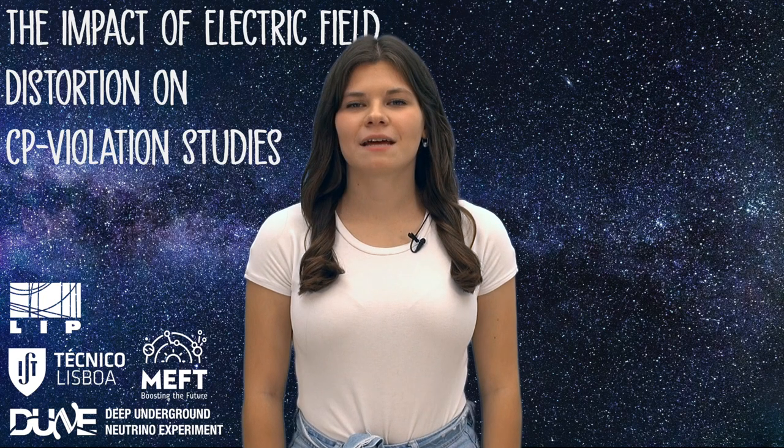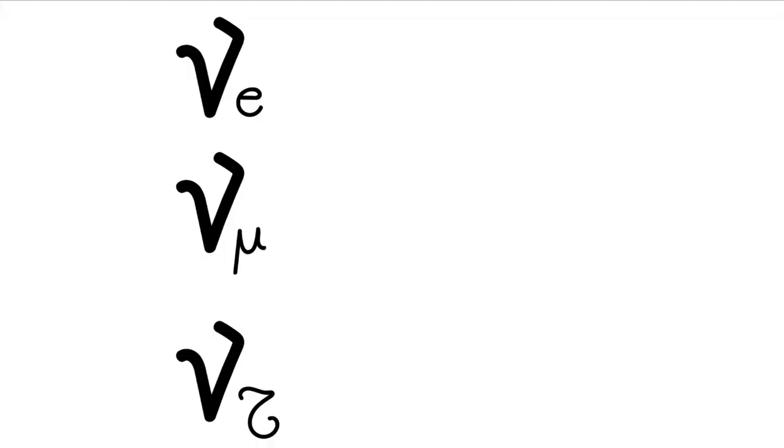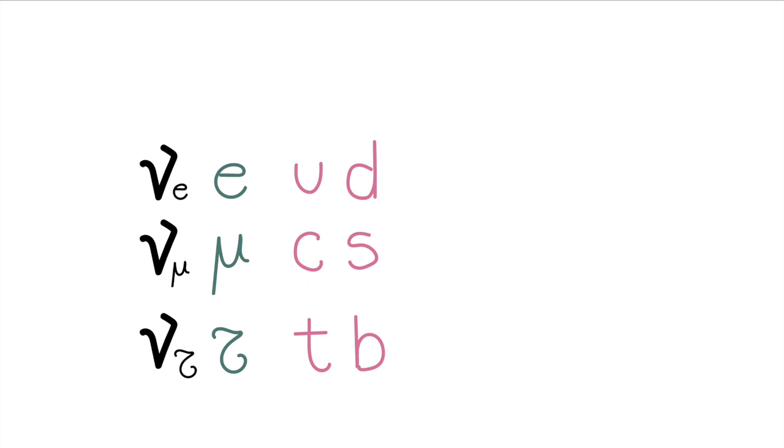My name is Gloria and I'm here to talk to you about neutrinos. This may sound a bit like sci-fi, but neutrinos are actually elementary particles. They are one of the types of building blocks of the universe, with the others — such as electrons, muons, taus, and the quarks — they form what we call matter.